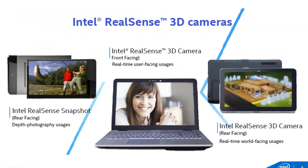We also have Intel RealSense Snapshot, which doesn't allow for gestures but does allow for some interesting post-processing of pictures — like being able to see how tall your child is every time you take their picture. The camera board is very small — about the size of a US quarter — and it's being manufactured and sent to OEMs including Asus, Acer, NEC, Dell, HP, Fujitsu, and Lenovo, who have publicly agreed to make Intel RealSense systems.